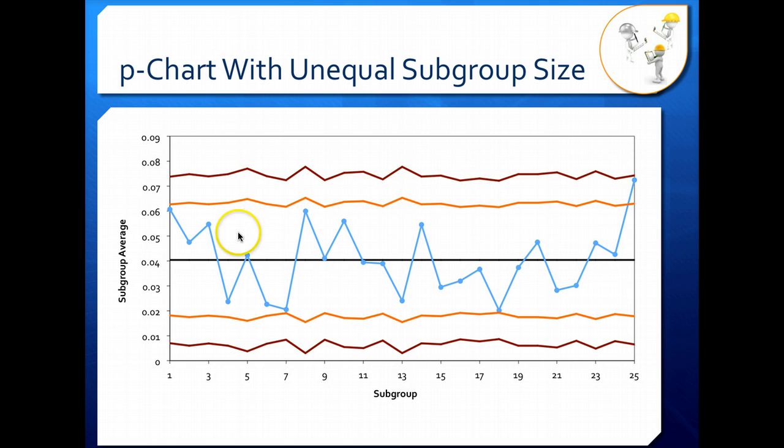And so as we change from point to point, our limits are going to move in and out depending on how big our subgroup is. Again, this point right here would have a bigger sample size in the subgroup than this point in subgroup 8.